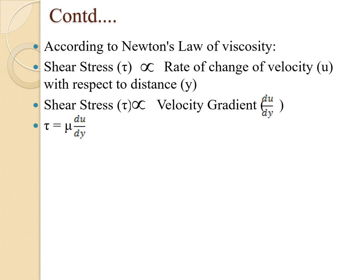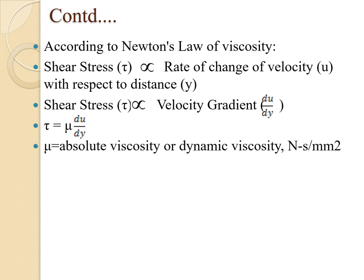According to Newton's law of viscosity, shear stress tau is directly proportional to the rate of change of velocity u with respect to distance y — that is, directly proportional to the velocity gradient du/dy. This gives the equation: tau = mu × (du/dy), where mu is the absolute viscosity or dynamic viscosity. The unit of absolute or dynamic viscosity is Newton-second per mm².